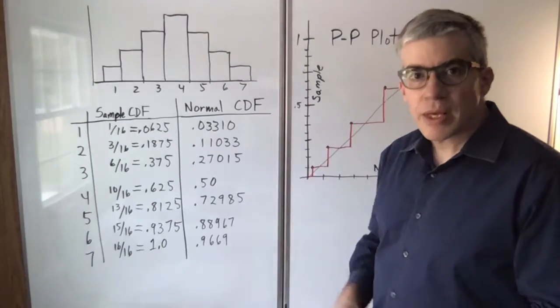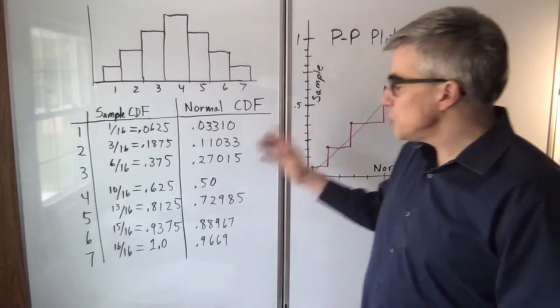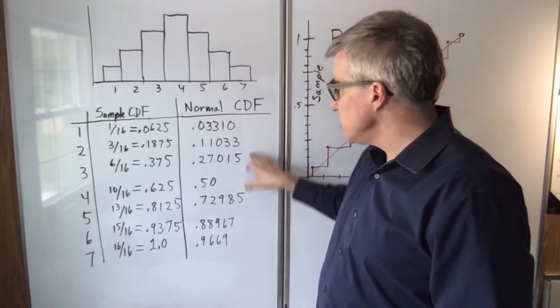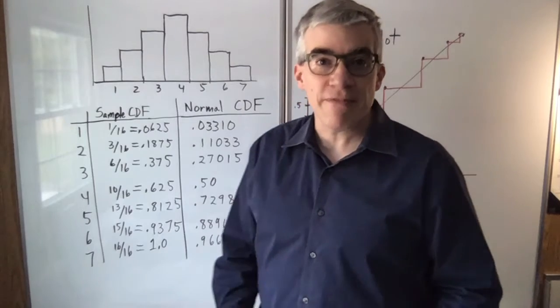Here are the rest of the data, and the PP plot is what you get when you use these for your x values and these for your y values.